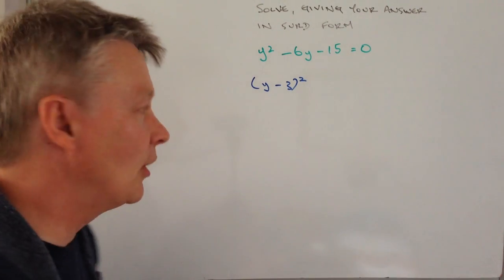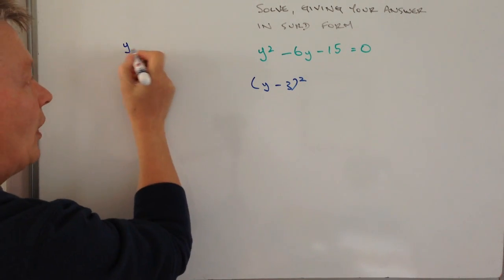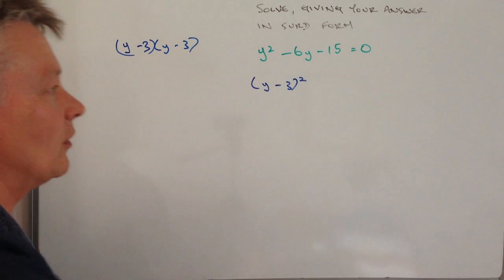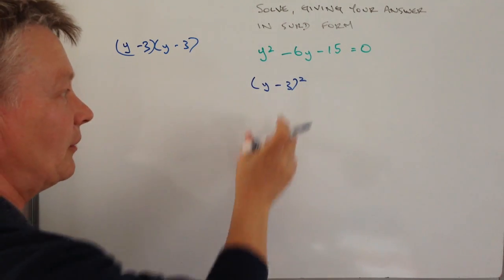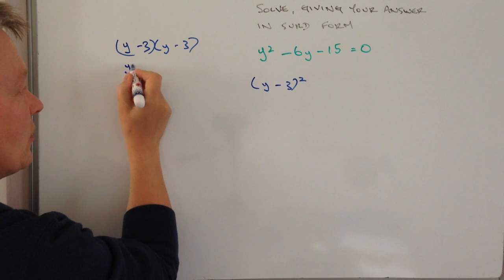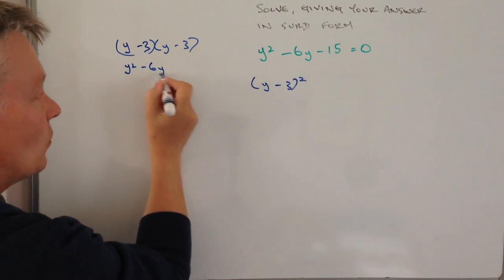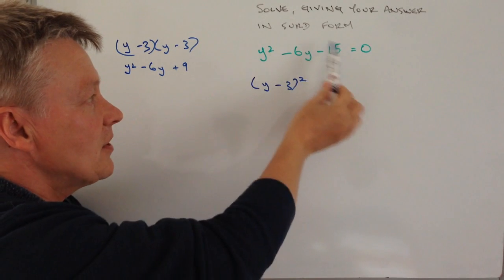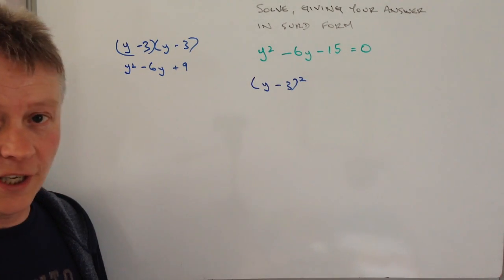Now let's just have a look at that for a moment. So if I've got y minus 3 times y minus 3, well what do I get? Well I'm going to expand this, so I've got y squared minus 6y plus 9. So in other words we're putting this equation into a slightly different form.